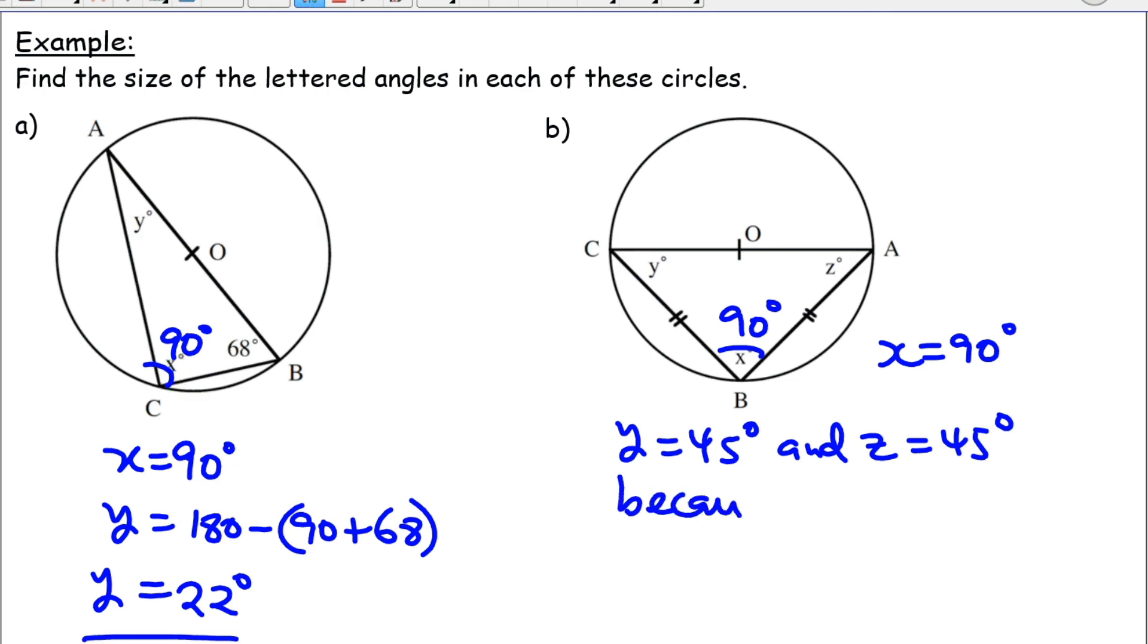because triangle ABC is an isosceles triangle. That's the reason why.